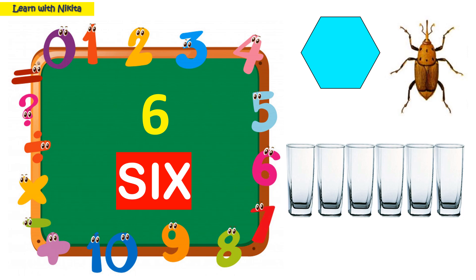Six sides of the hexagon, six legs of the insect, and six glasses in the image.